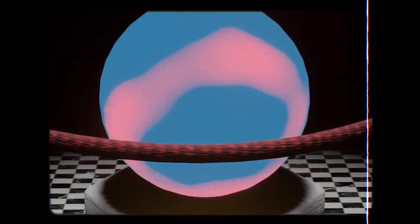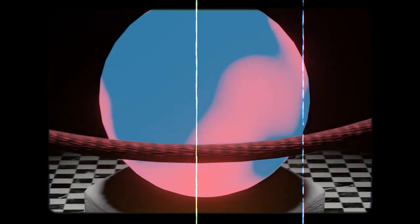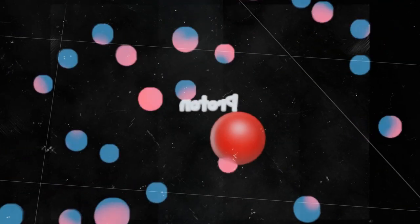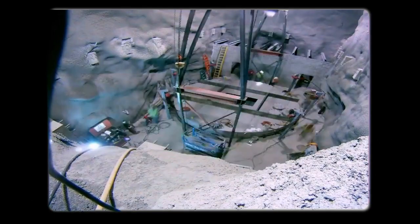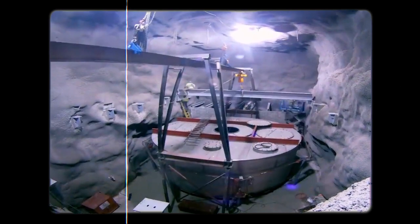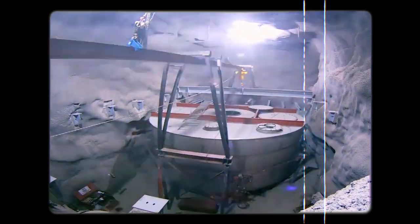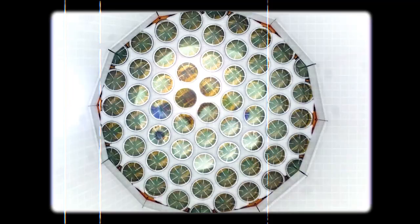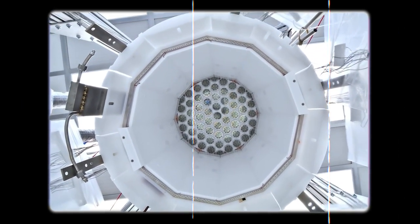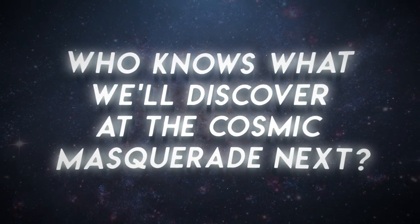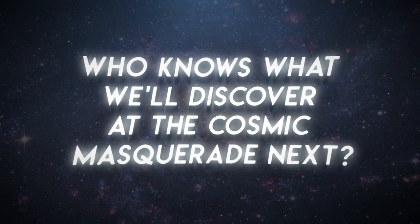Now, trying to spot a wimp in this cosmic ball is no easy task. These particles are masters of hide-and-seek, making them incredibly hard to find. But our patient scientists aren't giving up. They've set up sophisticated detectors deep underground, away from the distracting hustle of cosmic rays, hoping to spot a wimp deciding to interact with ordinary matter. The hunt is on, so who knows what we'll discover at the cosmic masquerade next?